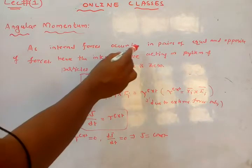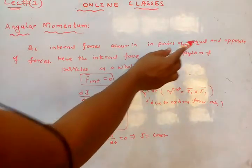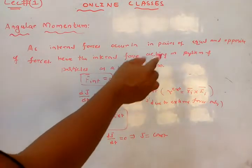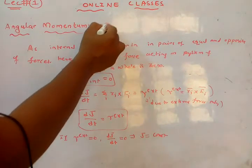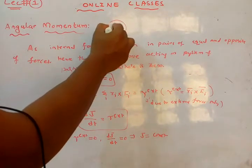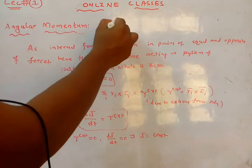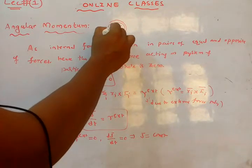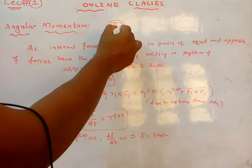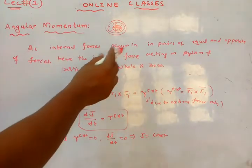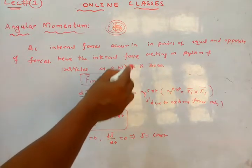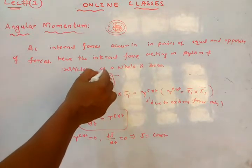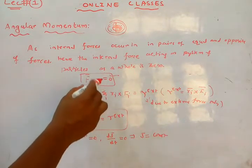Internal forces occur in pairs of equal and opposite forces. Since the internal forces acting on a system of particles occur in equal and opposite pairs, for example one particle exerts a force and the adjacent particle exerts the opposite force, the net internal force equals zero. Hence the internal force acting on a system of particles is zero, so there is no internal force — only external forces act.